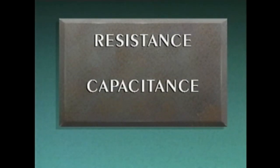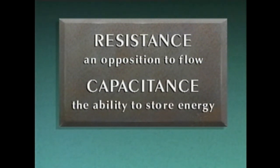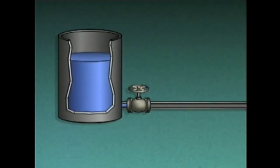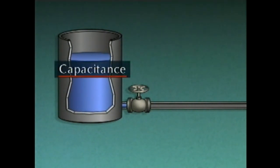All processes have characteristics that can affect how a control system responds to operating changes. Two of the more important are resistance and capacitance. Resistance can be thought of as an opposition to flow, while capacitance can be thought of as the ability to store energy. While these terms are commonly used in describing electrical circuits, they can also be applied to process systems that contain fluids. For example, resistance may be caused by a valve that opposes the flow of liquid from a container, and the system's capacitance is determined by the size of the container.